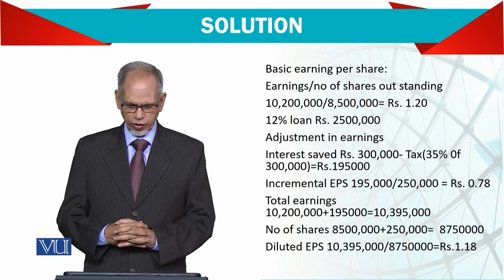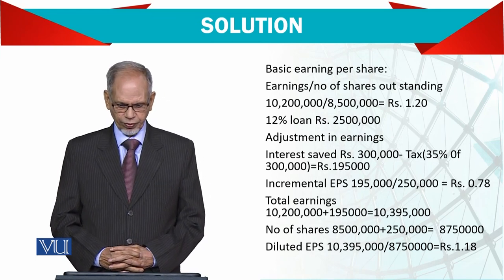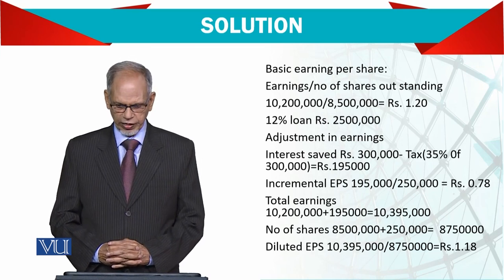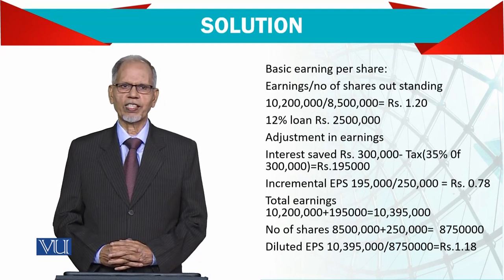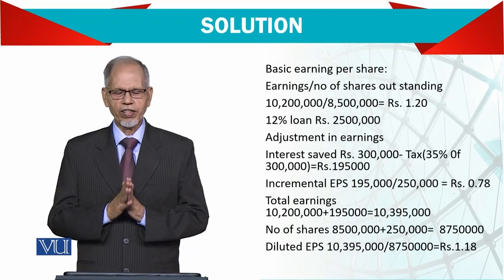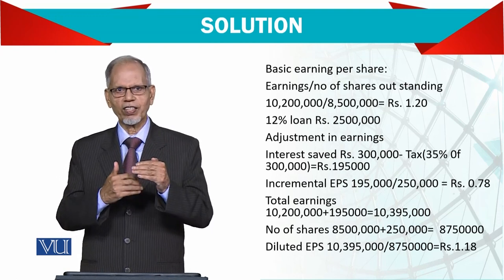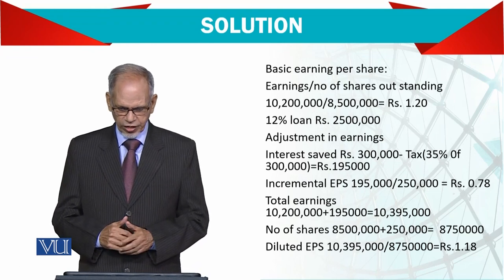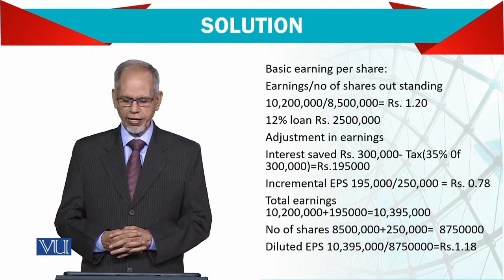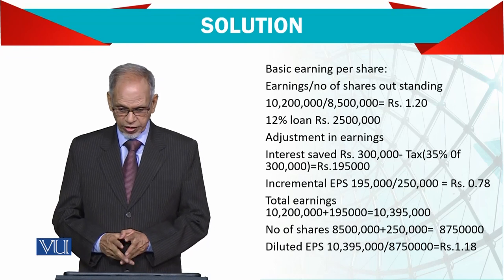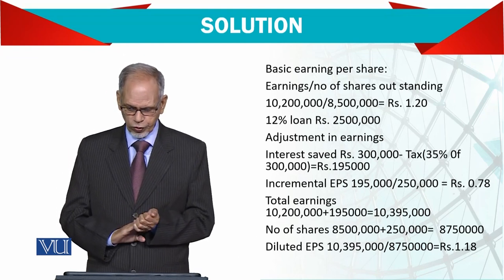Now let's see what impact the 12% loan has on our earnings and share numbers. Interest saved: 12% on a 2.5 million loan equals 300,000. After deducting tax, the balance remaining is 195,000. Remember, when interest is removed from expenses, you have to account for tax, so the income you add back must be net of tax. Total earnings become 10.2 million plus 195,000 = 10,395,000. For shares: at 1 share per 10 rupees, the number of new shares is 250,000.